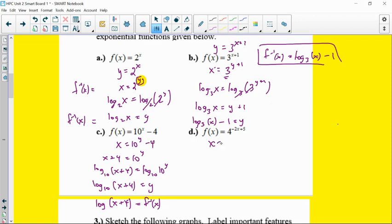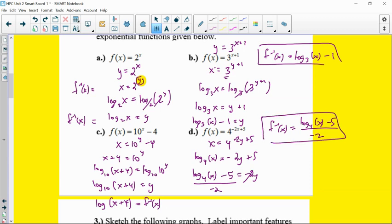Last one. So again, call this x equals 4 to the negative 2y plus 5. So as long as that exponential expression is by itself with the base here, you are ready to go. So let's log base 4 both sides. And then that equals negative 2y plus 5. So now I've got to subtract 5 on the outside of that log. So log base 4 of x minus 5 equals negative 2y and then divide by negative 2. So a little bit more complicated of an expression, but that's fine. So then we have the inverse function is equal to log base 4 of x minus 5 all over negative 2. And again, I'm hoping that just knowing how we find inverses and knowing a little bit about logs from last year, hopefully that's okay.